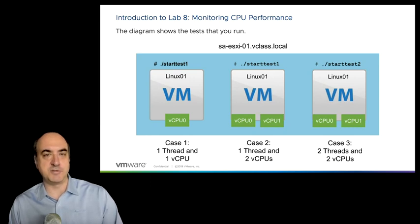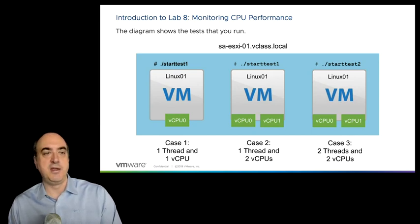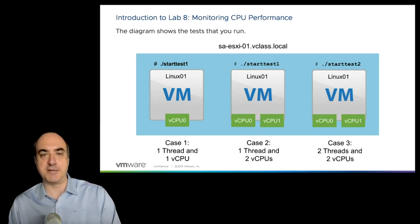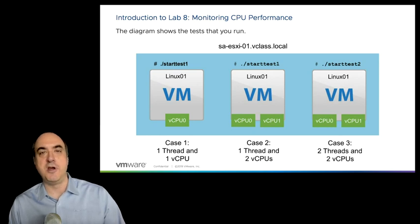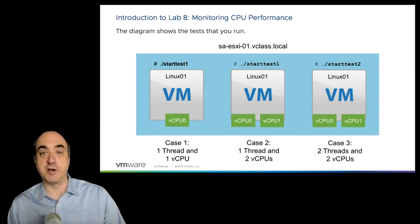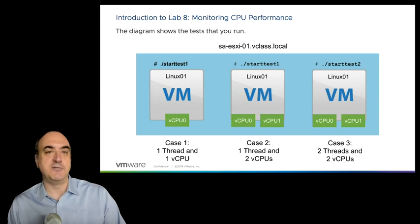You're going to record some performance benchmarks for how the VM is able to do work and how much time it spends on the CPU. Record metrics for 30 seconds, then shut the VM down and give it a second virtual CPU — so now the VM has two virtual CPUs, but it's still going to launch start_test_one, which is a single-threaded application.